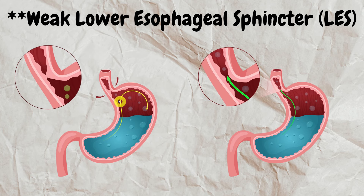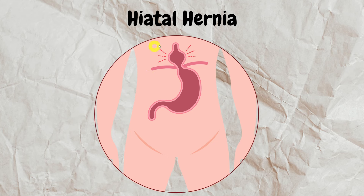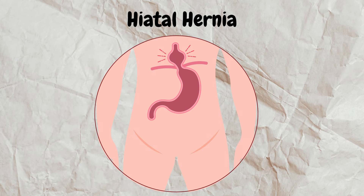We also have hiatal hernia as a cause. Hiatal hernia is an abnormal protrusion of the stomach and other abdominal contents through the hiatus of the diaphragm into the thoracic cavity. The gastroesophageal junction and the lower esophageal sphincter are displaced upward into the thoracic cavity, reducing sphincter pressure and allowing stomach contents to be easily refluxed into the esophagus. I have a detailed video on hiatal hernia linked in the description.